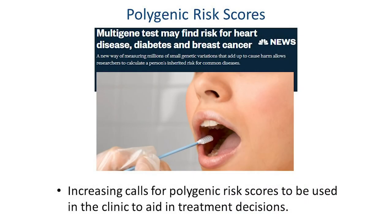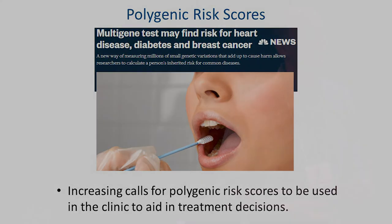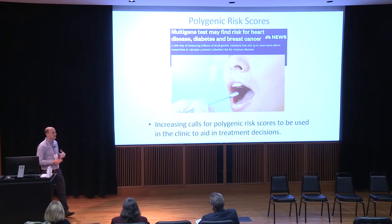In other fields, people are already arguing that we need to start using polygenic risk scores to make clinical and treatment decisions. A recent news story was inspired by a paper from the Broad Institute looking at cardiac disease, diabetes, and breast cancer. As we collect bigger samples and apply this to substance use disorders, we will be able to do the same thing for addiction.